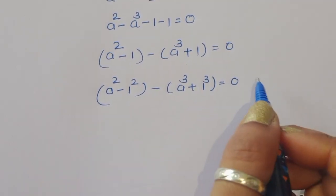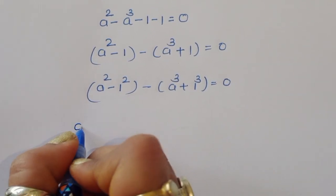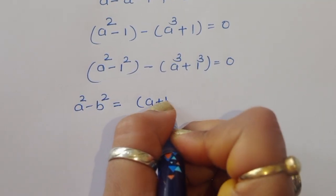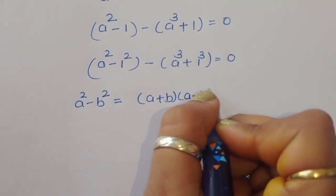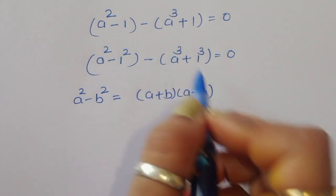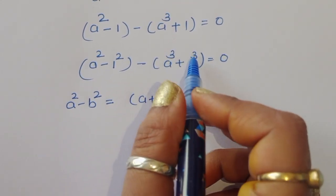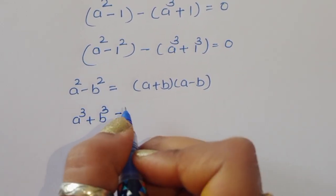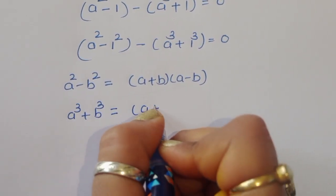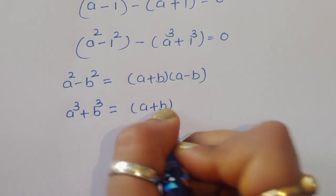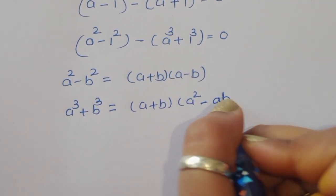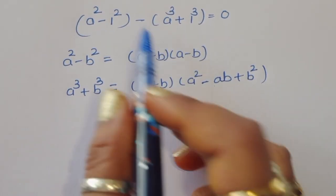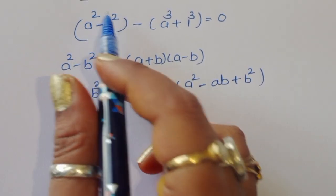We apply the formula a squared minus b squared equals (a + b)(a − b), and the formula a cubed plus b cubed equals (a + b)(a squared minus ab plus b squared). We will now use both these formulas.